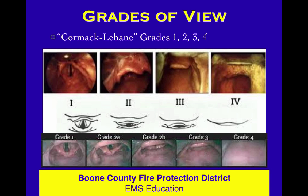The Cormack-Lehane grades — Grade 1, 2, 3, and 4 — are used to describe what you saw when documenting your airway management event, and they also drive your techniques and available options. A Grade 1 is defined as a clear view of all the laryngeal structures, including the glottic opening — the space between the cords.